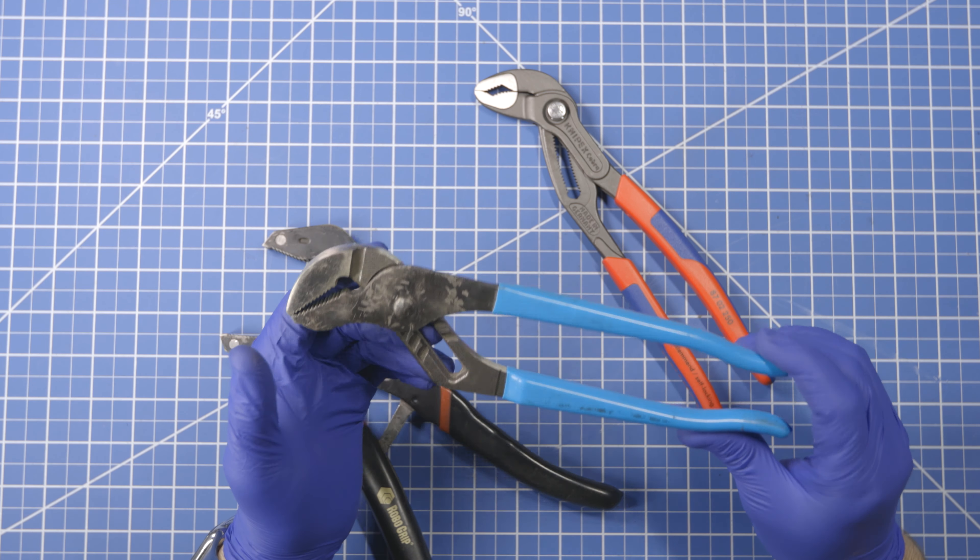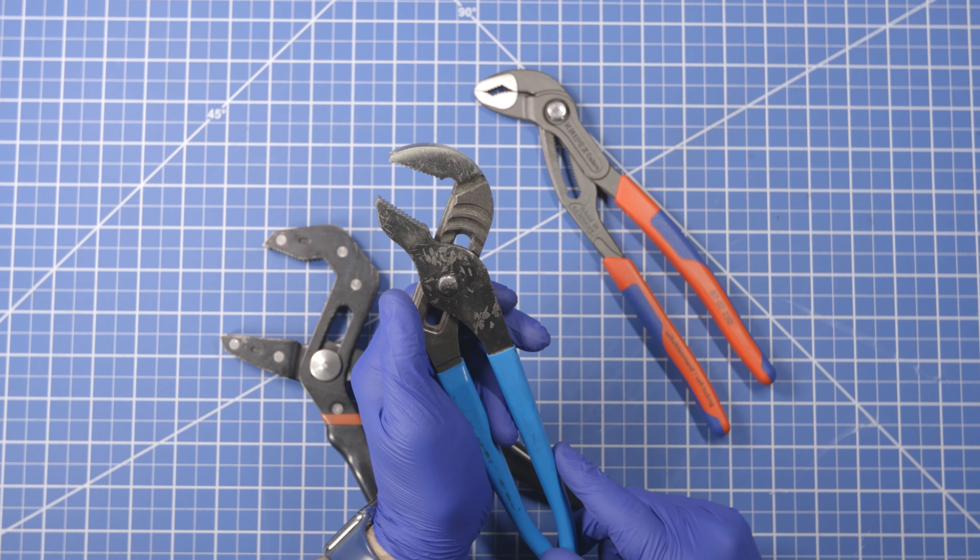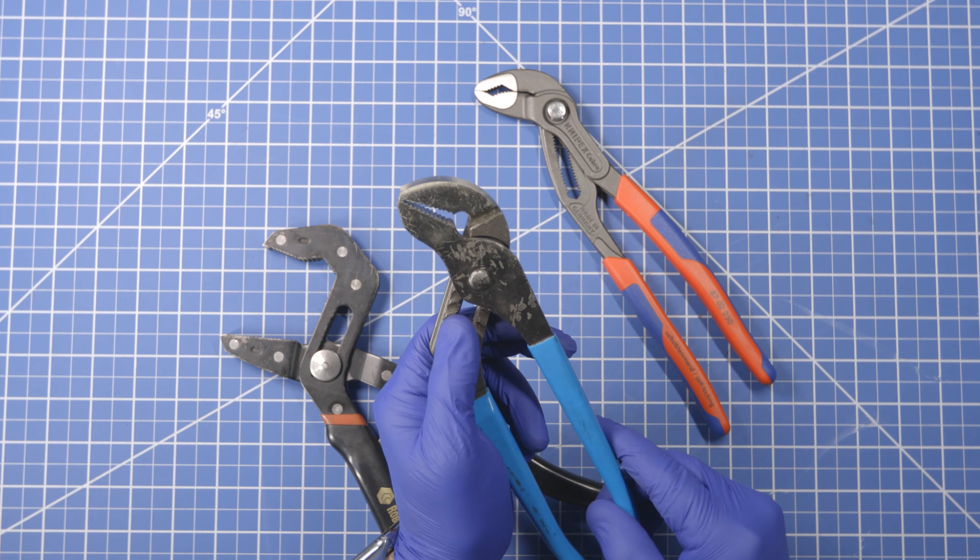Not terribly precise. You only have, let's see, one two three four five six seven options along the height of that upper jaw. That's how it works.